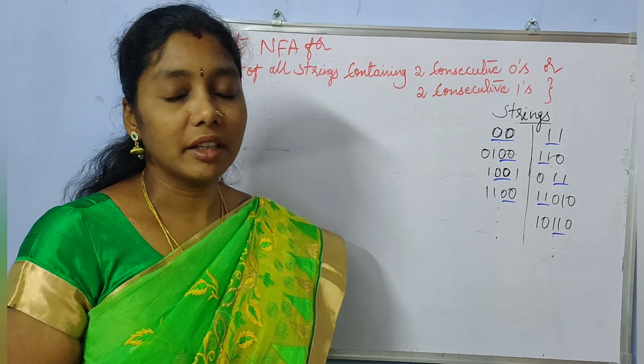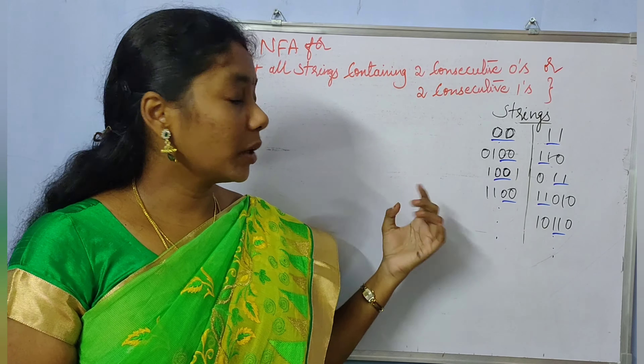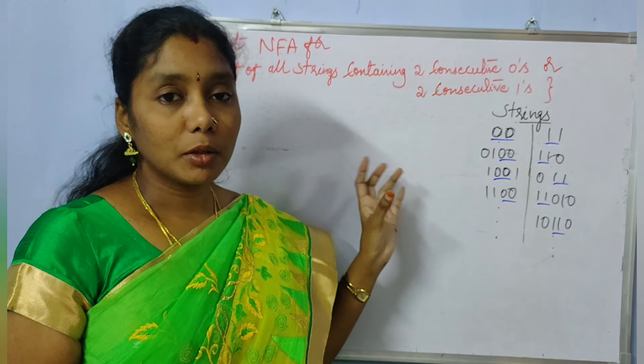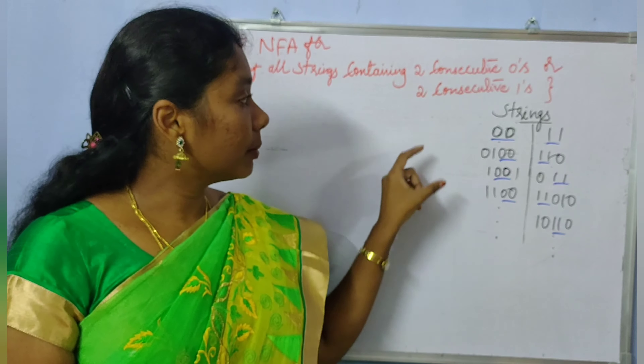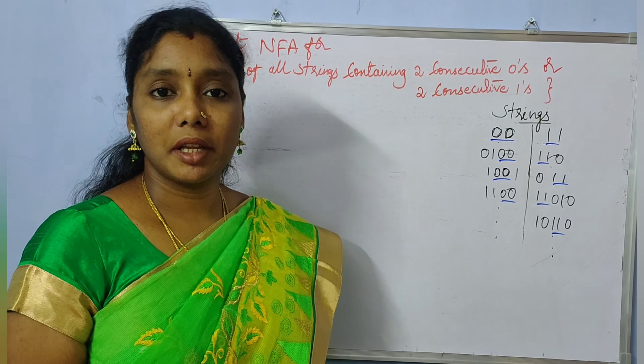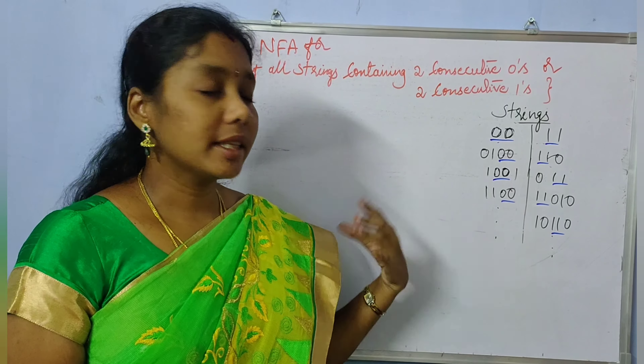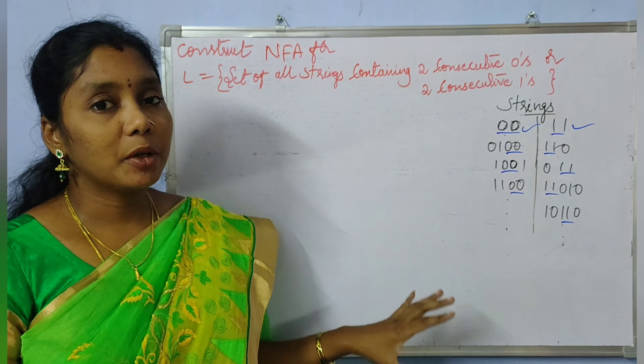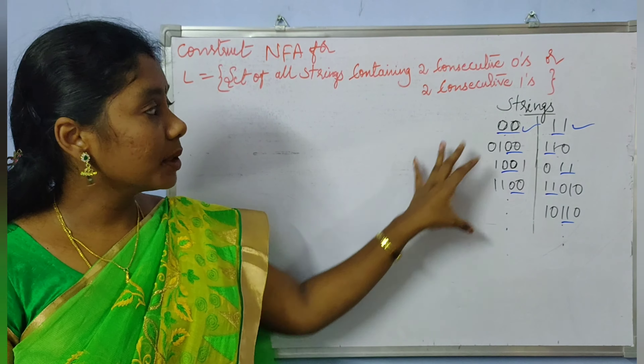Before constructing the whole NFA, let me divide it into two parts. The first part will be an NFA to accept strings containing two consecutive zeros, and the second part will be for two consecutive ones. Then we can club those two designs together. Now let us draw the NFA to accept the set of all strings consisting of two consecutive zeros.